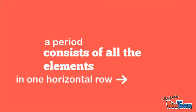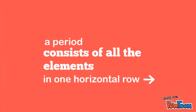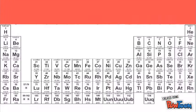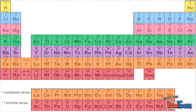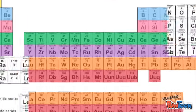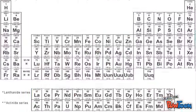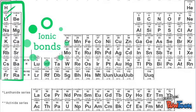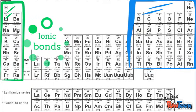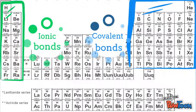A period consists of all the elements in one horizontal row. There are seven periods in the periodic table, and generally from left to right, the elements go from solid to liquid to gas at room temperatures. The elements on the left side of the period tend to form more ionic bonds, while the elements on the right side form more covalent bonds.